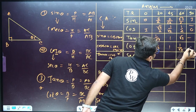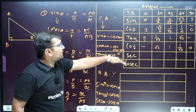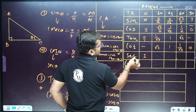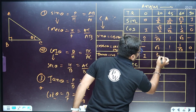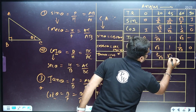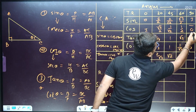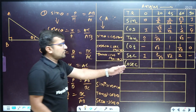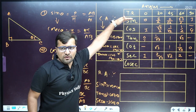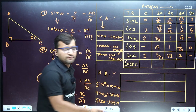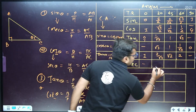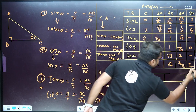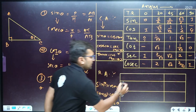Sec is the reciprocal of cos, so take the reciprocal of cosine values: sec 0° is 1, sec 30° is 2/√3, sec 45° is √2, sec 60° is 2, and sec 90° is undefined. Cosec is the reciprocal of sin, and also complementary to sec, so you can reverse: cosec 0° is undefined, cosec 30° is 2, cosec 45° is √2, cosec 60° is 2/√3, and cosec 90° is 1.